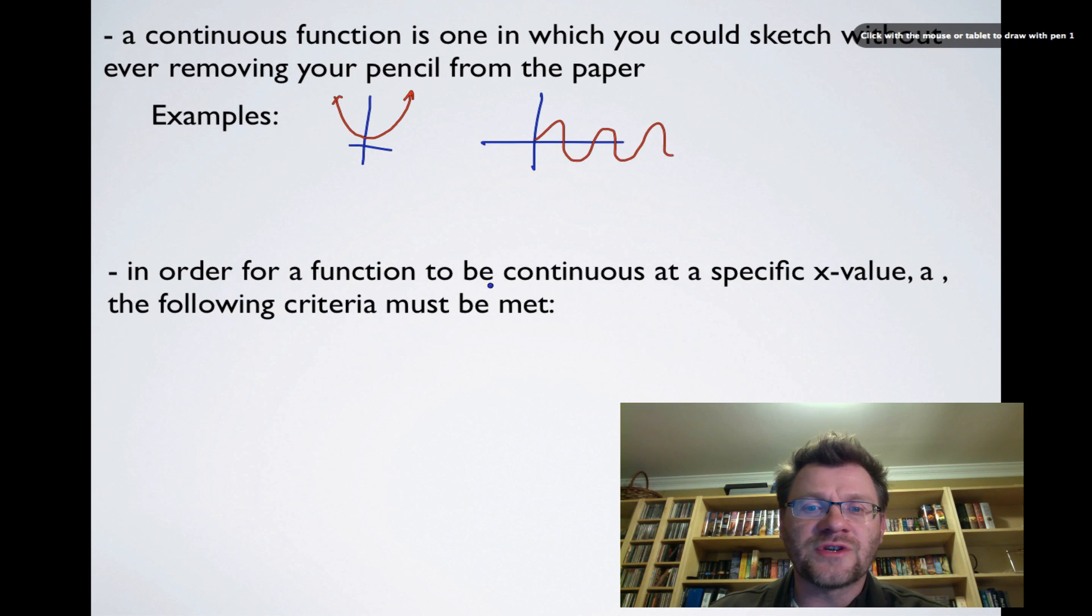So in order for a function to be continuous at a specific x value, which we're going to call that x value a, the following criteria must be matched. Number one, the limit as x approaches a from the positive side has to equal the limit as x approaches a from the negative side, and we've talked about limits before, and that also has to equal f of a.